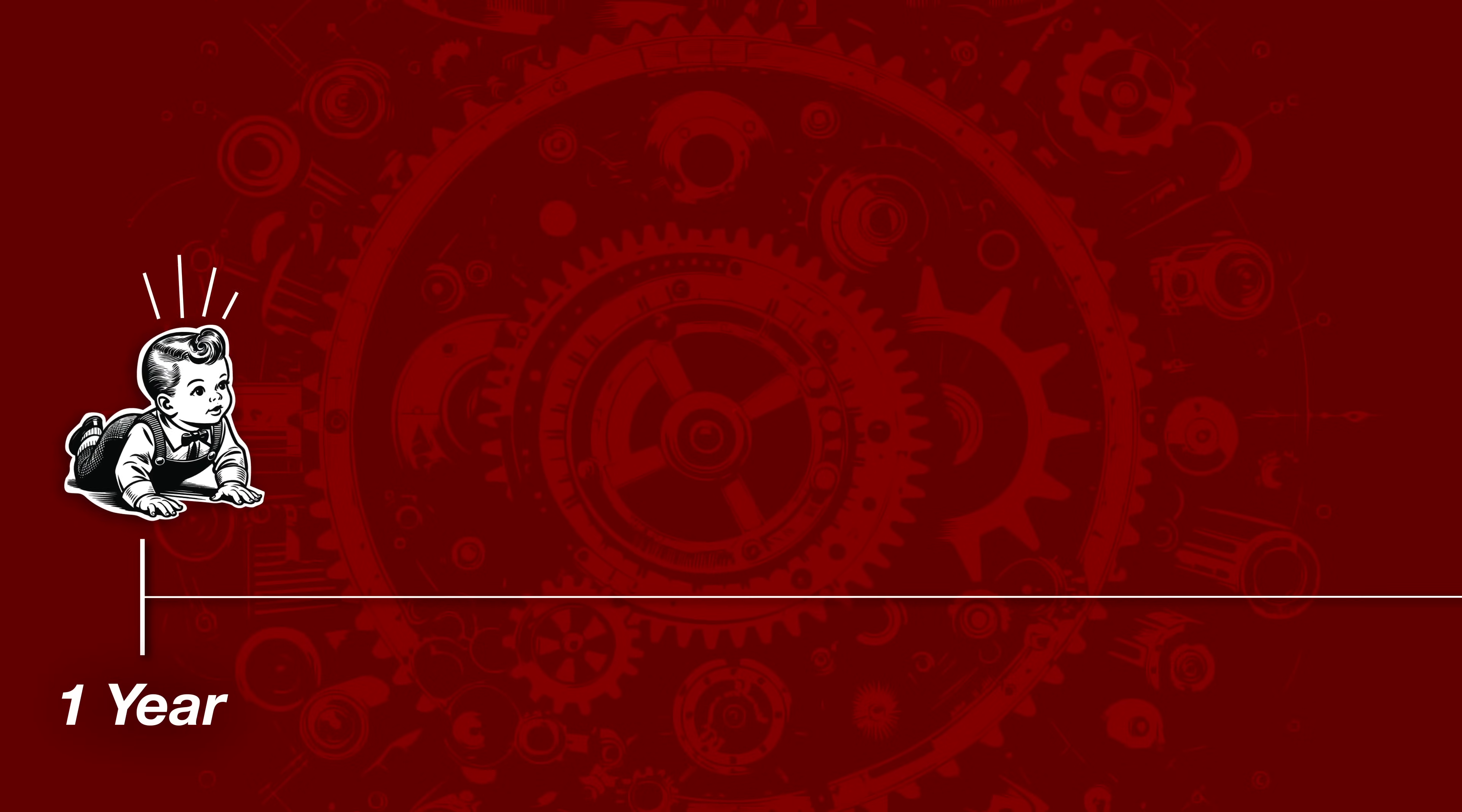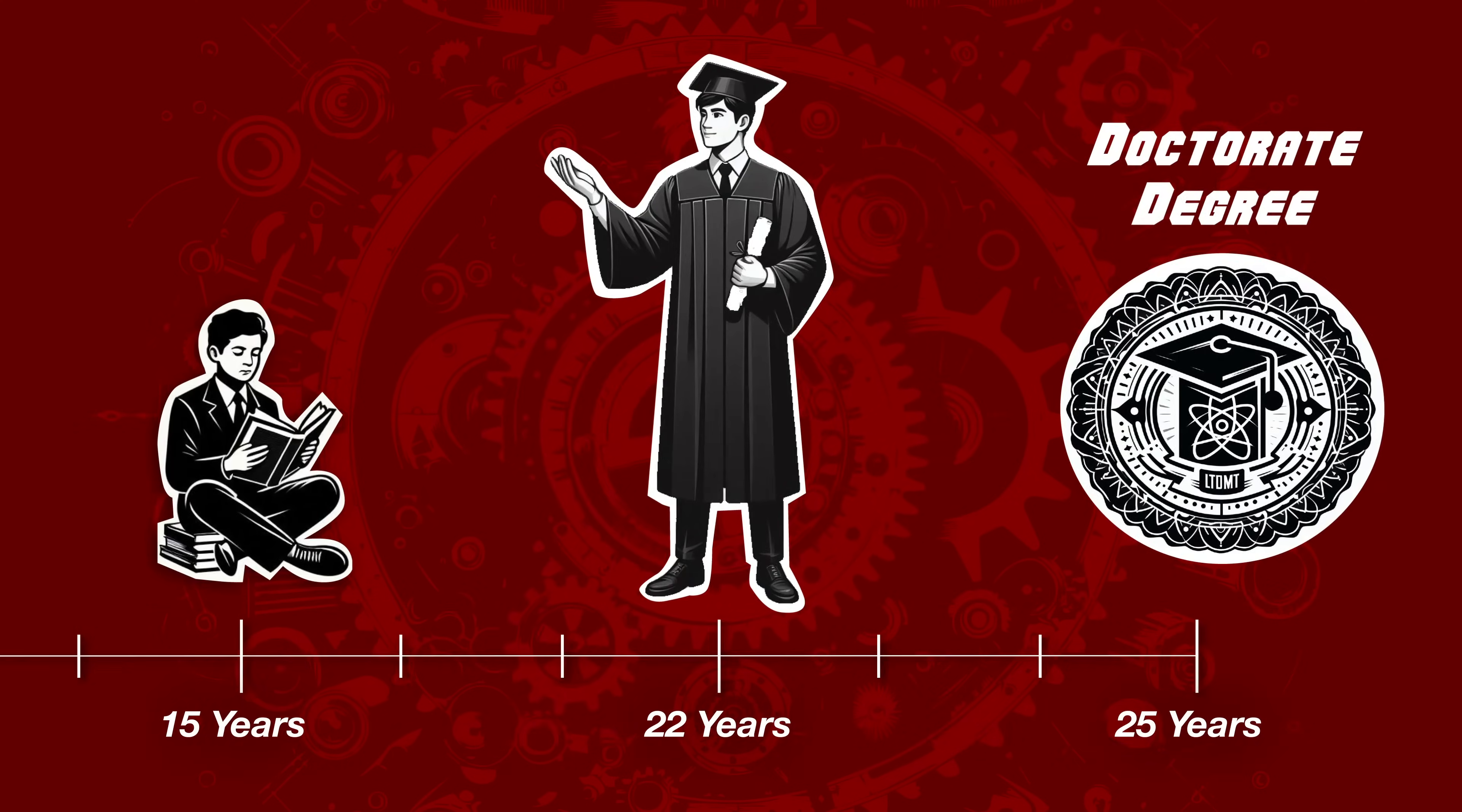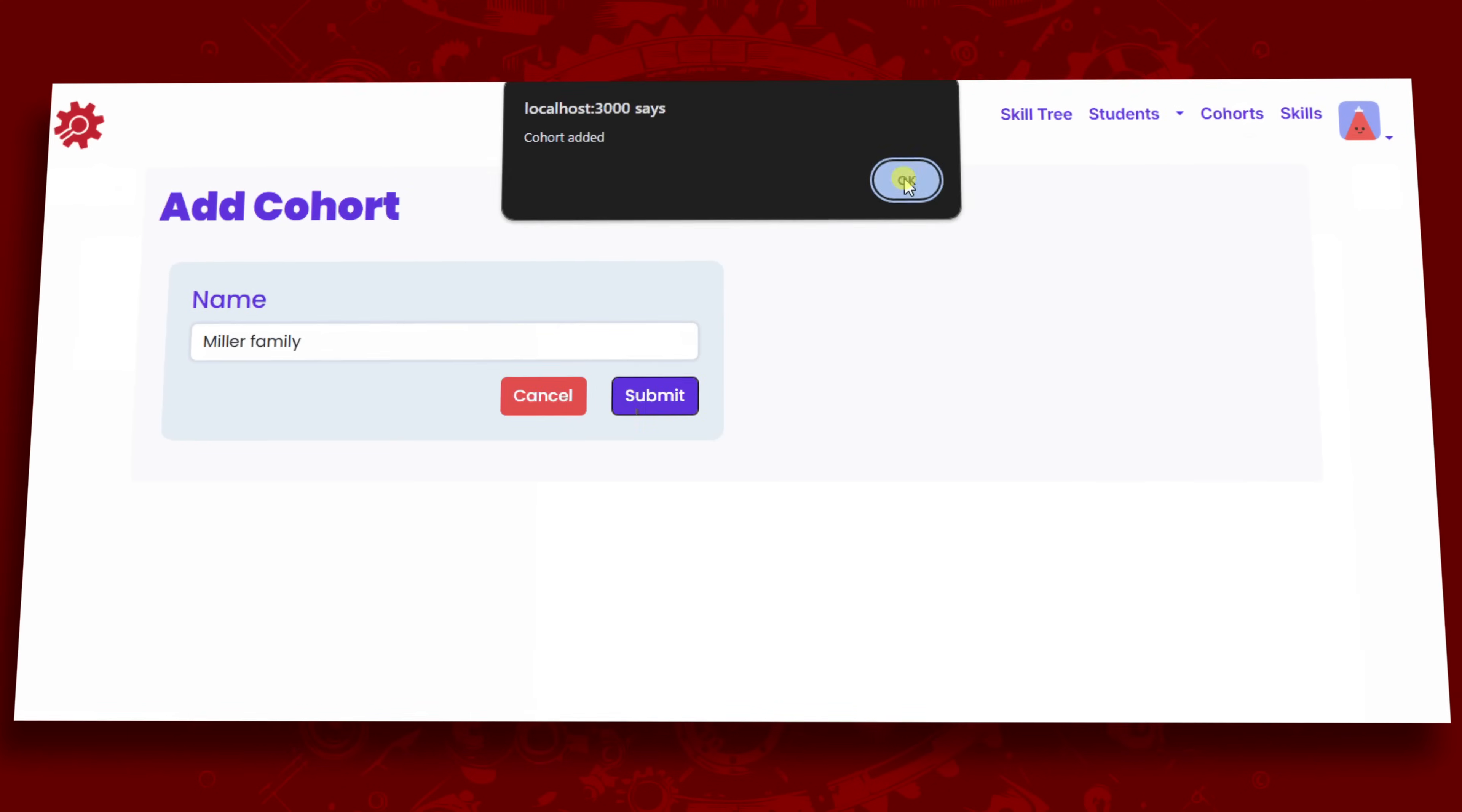The skill tree covers everything from the basics a student may learn in elementary school, to topics reserved for PhD students and far beyond. You'll find everything from aquaculture pharmacology to tort law or how to hang drywall. The skill tree is customizable to accommodate the sensibilities of any religious or cultural framework.